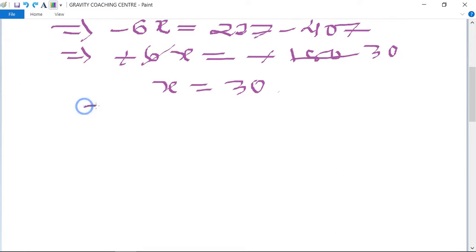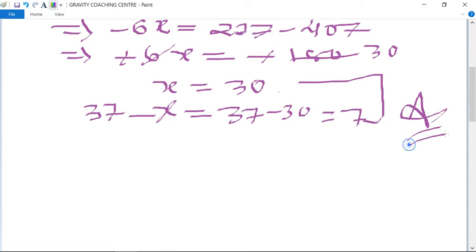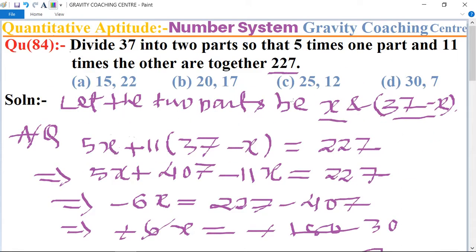The other part, 37 minus x equal to 37 minus 30 equal to 7. So 30 and 7, which is the required answer. So option D is the correct answer.